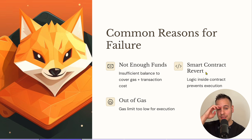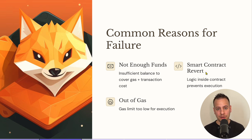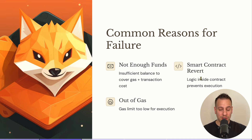Another common reason is that the smart contract you're interacting with is reverting the transaction. Smart contracts are programs written in Solidity, and developers can use the revert or require statements. When the code reaches these statements, the transaction reverts — you'll see an error in your wallet or blockchain explorer, and none of the operations will be registered on the blockchain. This is situation-specific with no single fix.